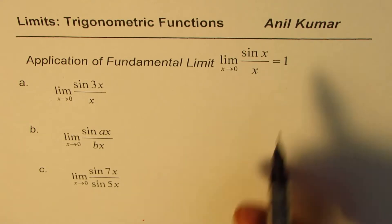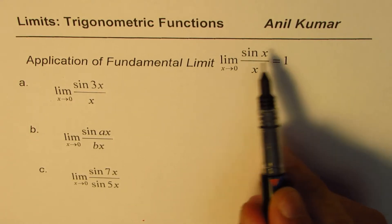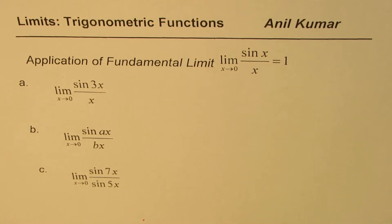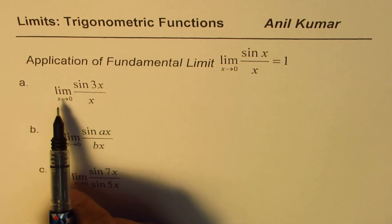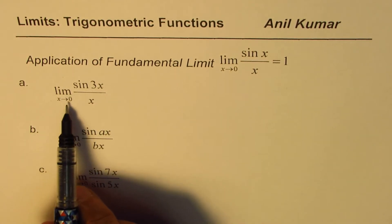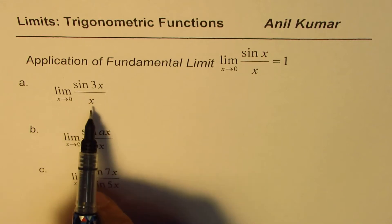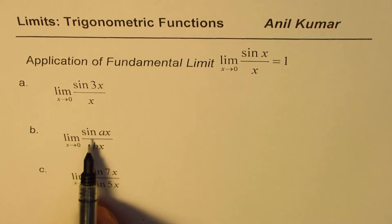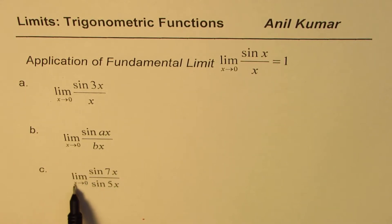let us try to understand how to apply this most useful result in finding limits for trigonometric functions. I've taken a few which involve similar kinds of functions. The first one here is find limit when x approaches 0 for sin 3x over x. Then we have limit x approaches 0 for sin ax over bx. And c is find limit when x approaches 0 for sin 7x divided by sin 5x.